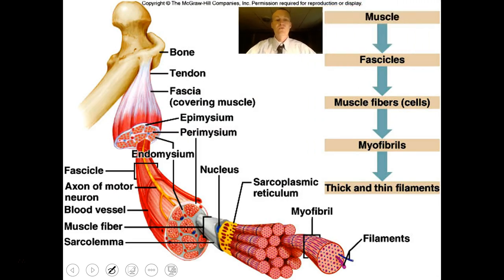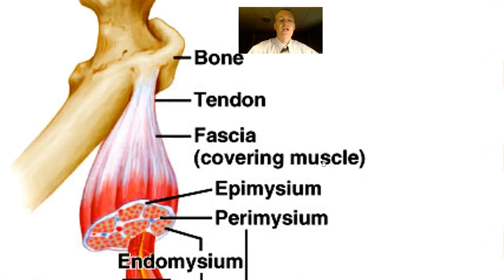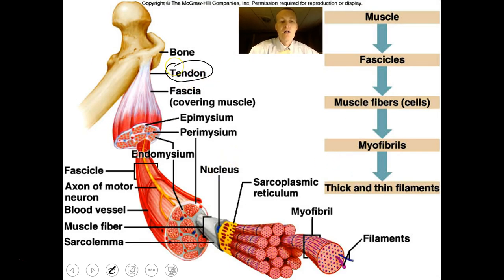Now let's talk about how a muscle in a vertebrate animal is arranged and connected to the endoskeleton. Muscles are attached to bones via a structure called the tendon — a cord of connective tissue. Bones have a covering called the periosteum, and the tendon grows right into that periosteum. The tendon also grows into a covering around the muscle called fascia.